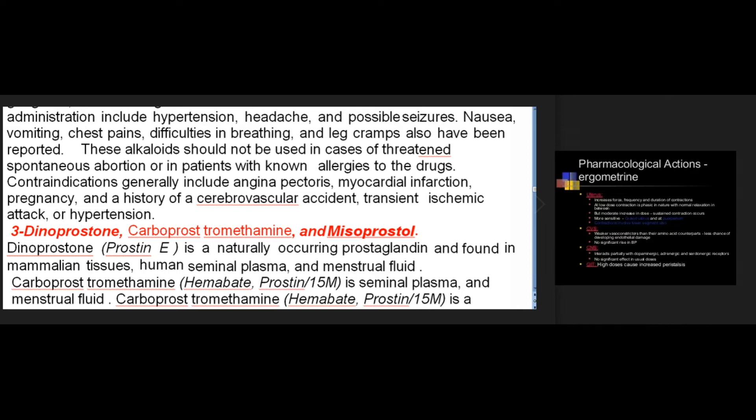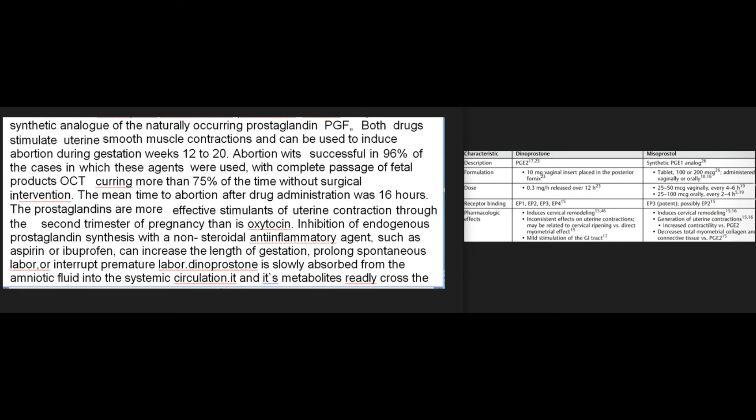Uterine stimulant #3: Dinoprostone, Carboprost Tromethamine, and Misoprostol. Dinoprostone (Prostin E2) is a naturally occurring prostaglandin found in mammalian tissues, human seminal plasma, and menstrual fluid. Carboprost tromethamine (Hemabate; Prostin/15M) is a synthetic analog of the naturally occurring prostaglandin PGF2α. Both drugs stimulate uterine smooth muscle contractions and can be used to induce abortion during gestation weeks 12 to 20. Abortion was successful in 96 percent of cases in which these agents were used, with complete passage of fetal products occurring more than 75 percent of the time without surgical intervention. The mean time to abortion after drug administration was 16 hours.